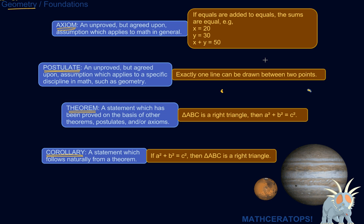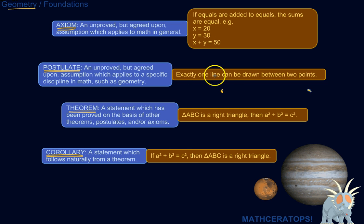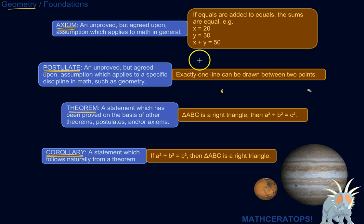A theorem is a statement which has been proved on the basis of either other theorems which have been proved, or on the basis of postulates or axioms. So we start with these axioms — like 'if equals are added to equals the sums are equal,' or 'exactly one line can be drawn between two points' — and you build up the system step by step. If this is true, then that must be true, and then that must be true.